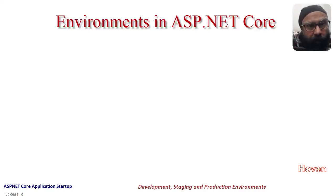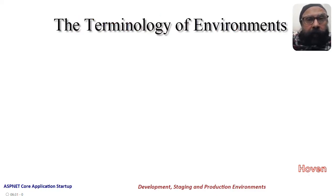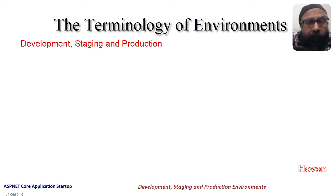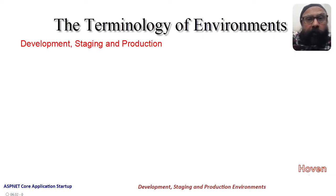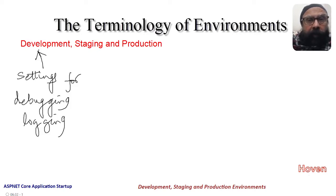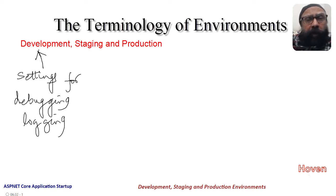Let us first go through the terminology of environments in ASP.NET Core. In software development, you may have already heard of three broad stages: production, staging, and development. In some literature you may have heard of alternate but similar terms like beta, alpha, etc. All these mean exactly the same — that software development takes place in certain stages. During the first stage, an application is run with settings for easier debugging and logging, and there is redundant code that helps a developer examine the state of various variables.